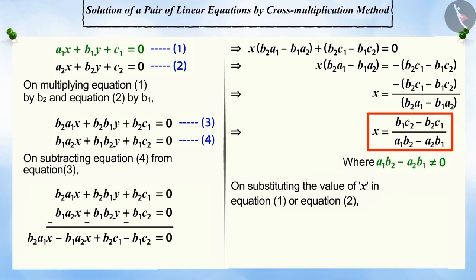Substituting this value, y is equal to c1a2 minus c2a1 divided by a1b2 minus b1a2, where a1b2 minus b1a2 is not equal to 0.